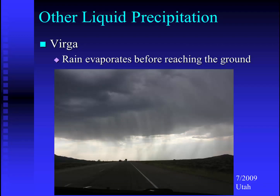Another type of precipitation is virga — rain that evaporates before it hits the ground. This picture was taken as I was driving down a highway in a convertible with the top down. I decided not to put the top up, and when I got to the top of a hill where it appeared to be raining, there was no rain hitting the ground — the rain evaporated before it reached the surface. This can be a particular problem out west where there are dry thunderstorms: lightning strikes, and if no water hits the ground, it can increase the likelihood of fire.